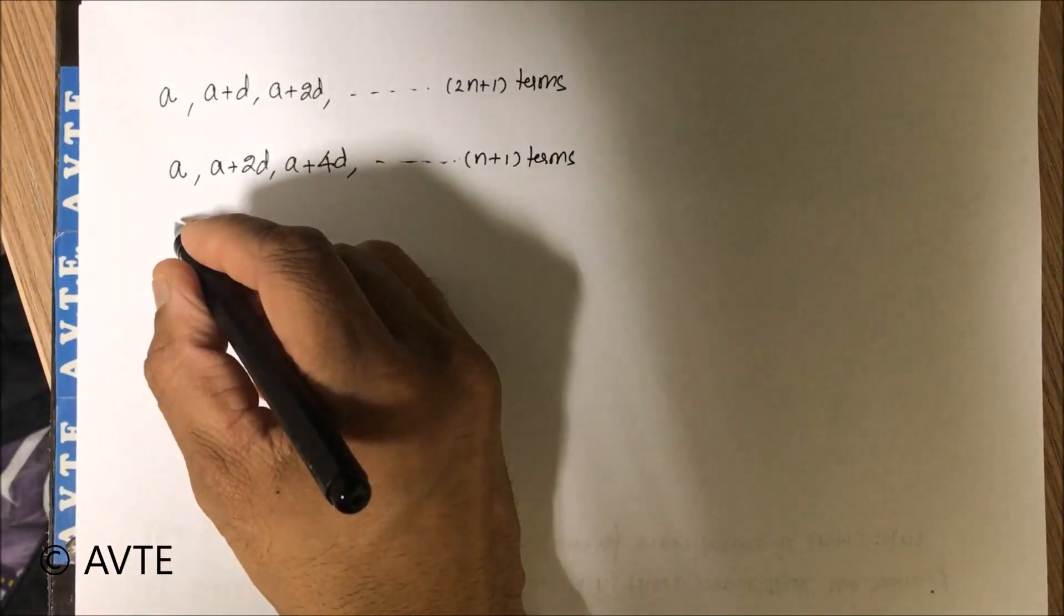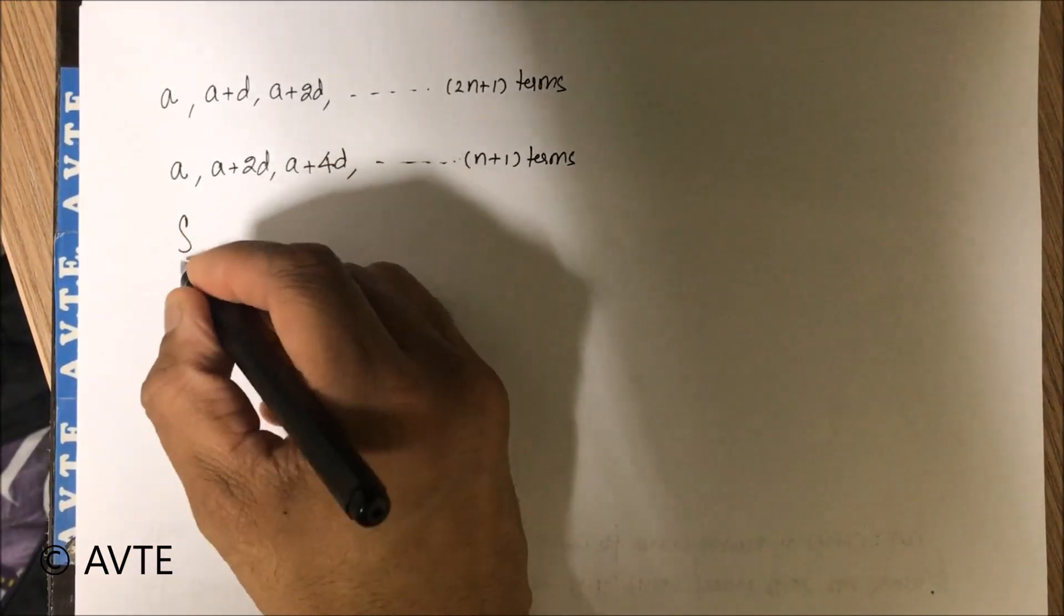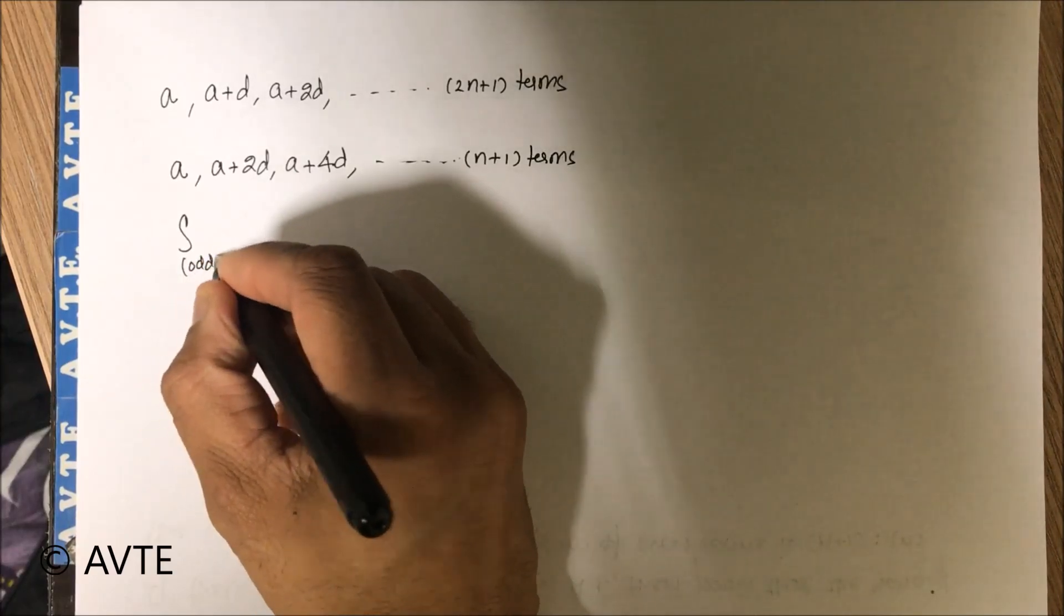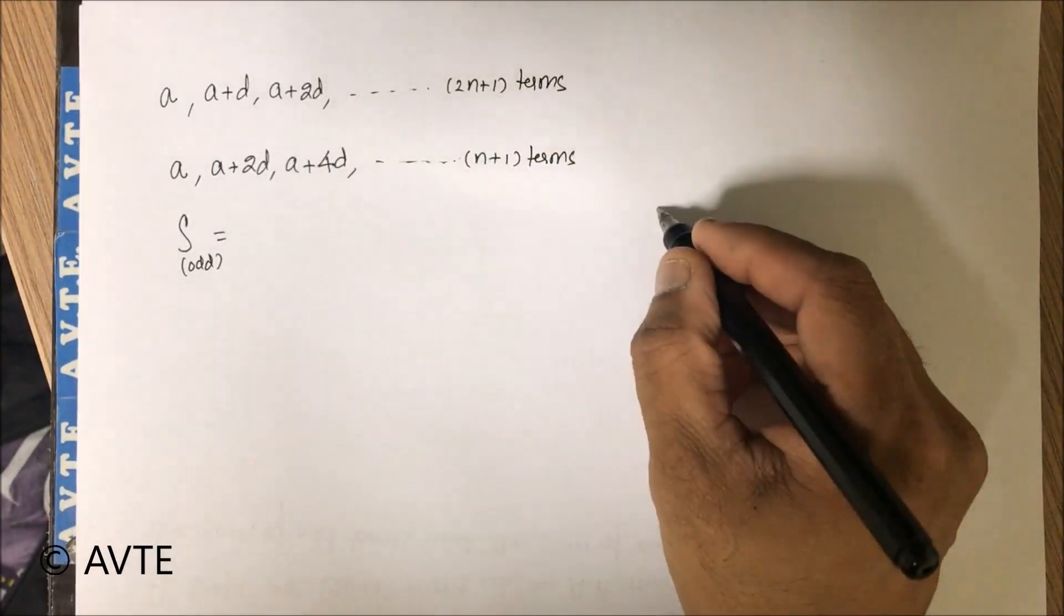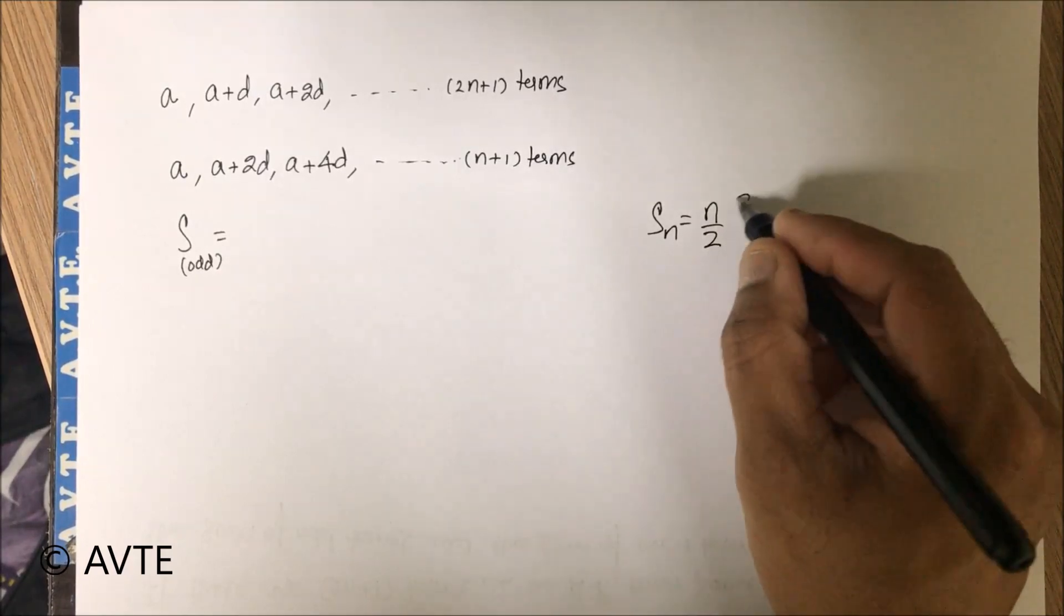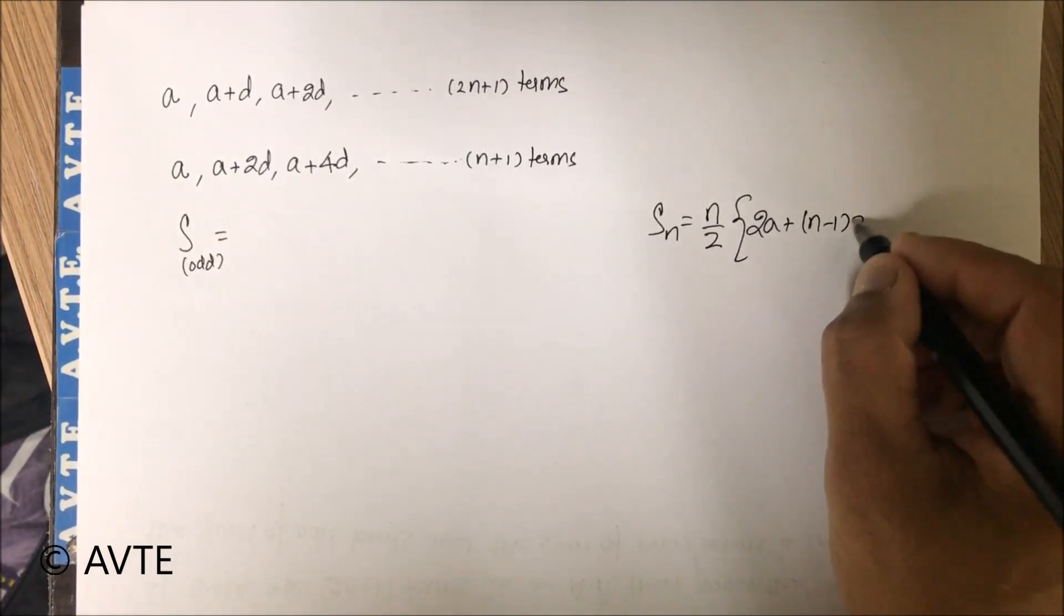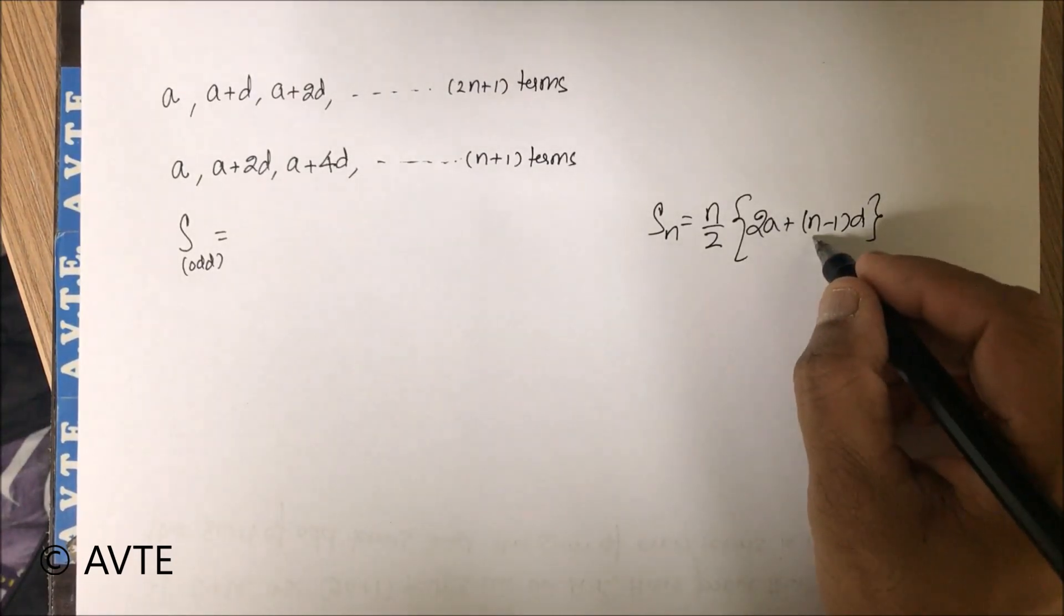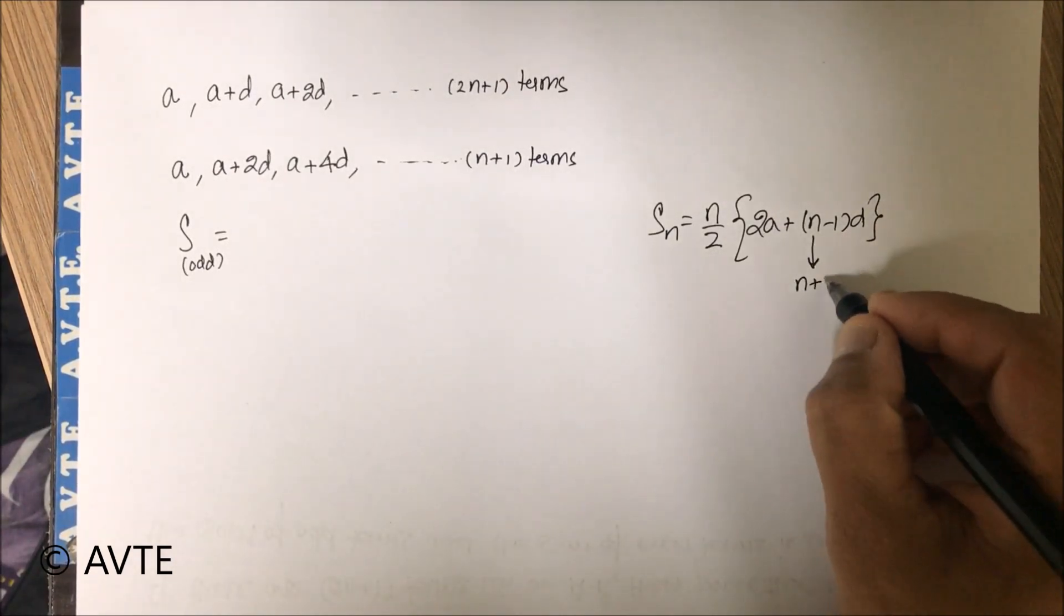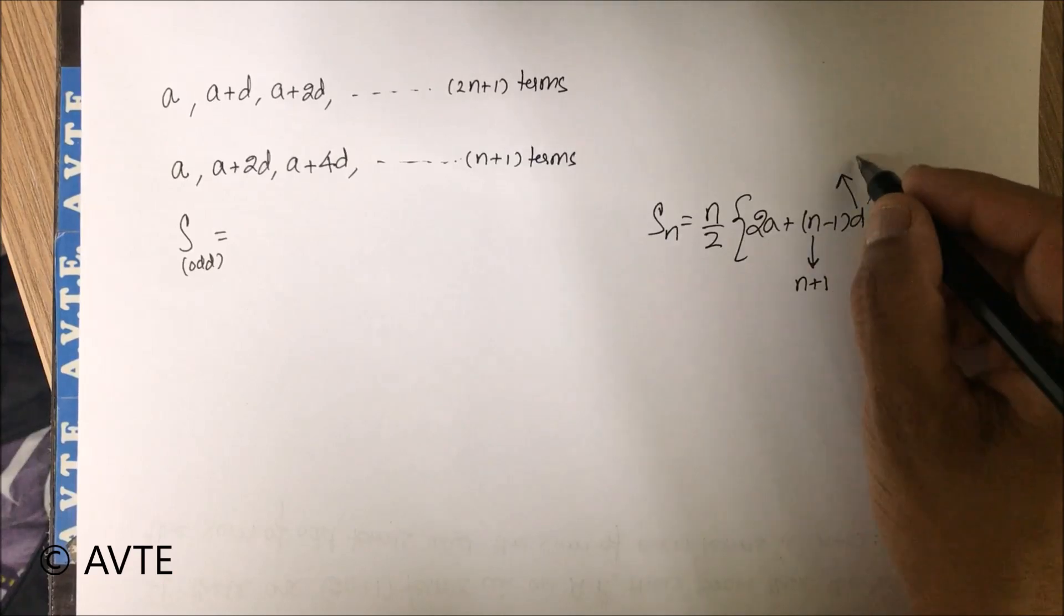Now what is the sum? If I take sum of odd terms, then using the formula S_n equals n by 2 times 2a plus n minus 1 times d. Here n is actually n plus 1 and d is 2d.